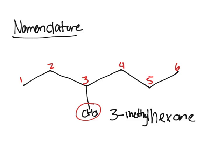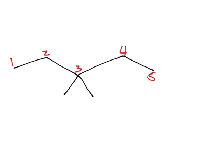And so let's try another one. Same thing, pretty much. However, we have two. So first, you start by numbering the longest chain, 1, 2, 3, 4, 5. So you have five carbons in the longest chain, so that's going to be a pentane.